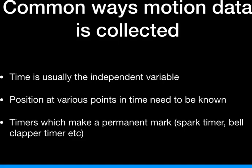On the other hand, if the object was accelerating when it was pulling the tape through the timer, the gaps between dots would get bigger. The bigger gaps result from the fact that it's traveling at a faster speed at later points in time than it is at the early points of the motion.